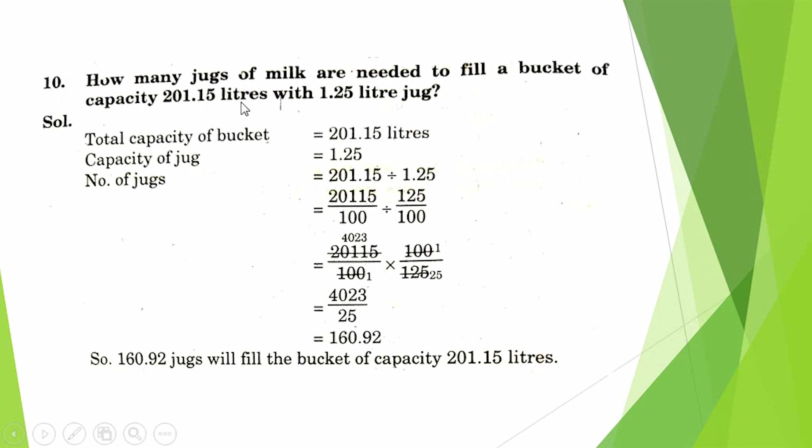Question number 10: How many jugs of milk are needed to fill a bucket of capacity 201.15 litres with 1.25 litre jug? Total capacity of bucket: 201.15 litres. Capacity of jug: 1.25. Now we divide this value.